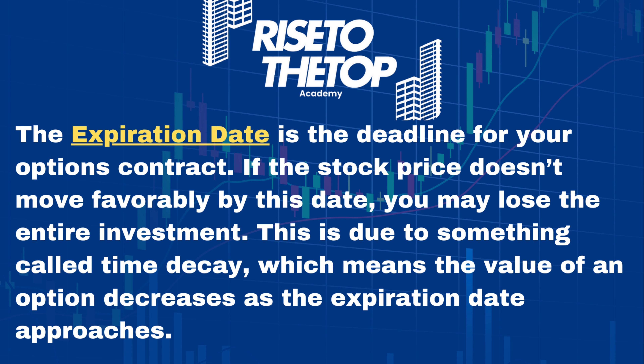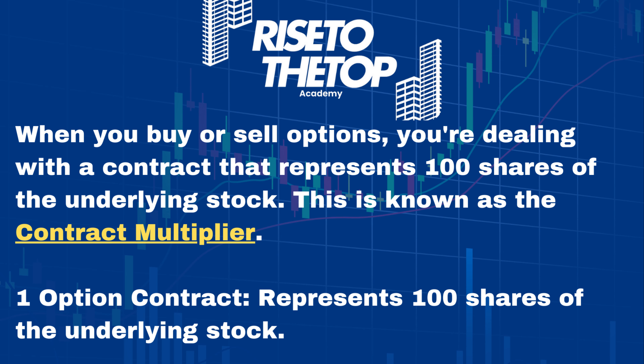The expiration date is the deadline for your option contract. If the stock price doesn't move favorably by this date, you may lose the entire investment. This is due to something called time decay, which means the value of an option decreases as the expiration date approaches. Don't get scared — there will be videos on risk management, and I'm going to give you guys a free risk management plan so you can manage your money like a business.